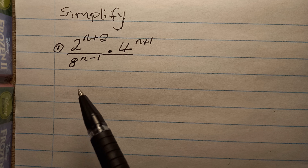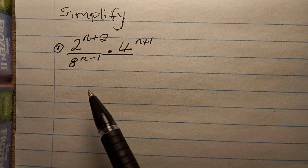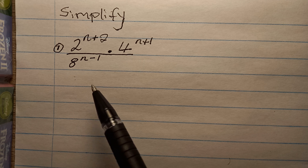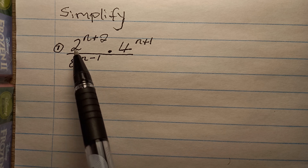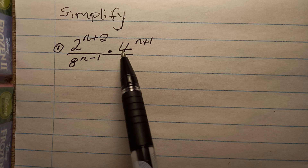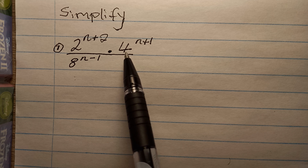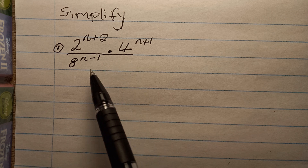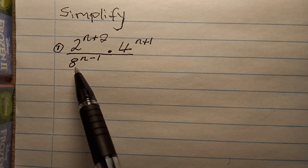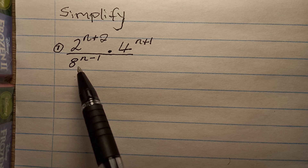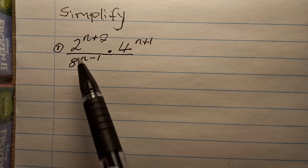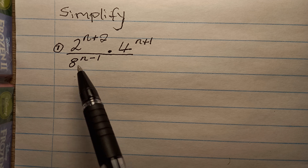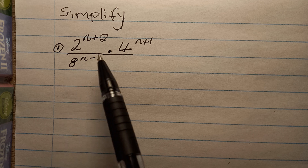A prime number is any number that can only be divided by itself and one, and doesn't leave remainders. So in this case, two is our prime base, but four is not our prime base because four can be divided by two, four, and one. Eight as well is not a prime number because it can be divided by four, two, eight itself, and one. But two can only be divided by two and one.